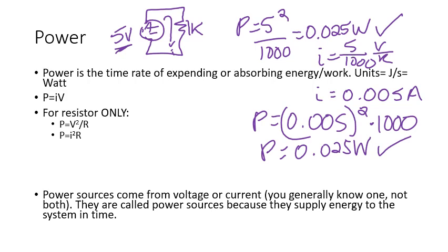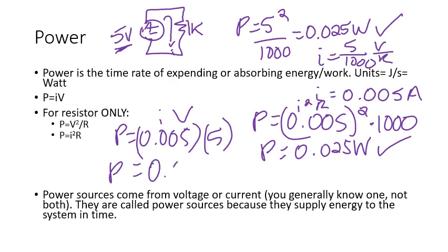Or I could have done the current itself, which was 0.005, times V, which my voltage was five volts. Gets me the same thing, 0.025 watts. So that's how you find power through a resistor. You can do it from either current or voltage. Remember Ohm's law would tell you the other one once you know one.